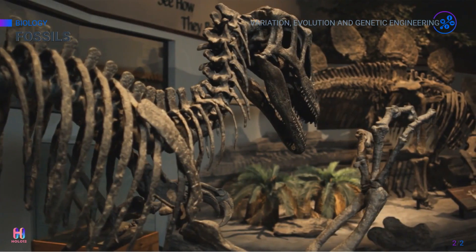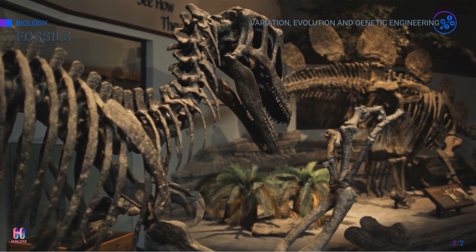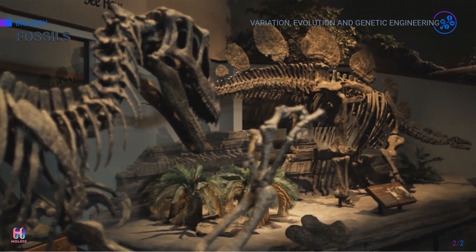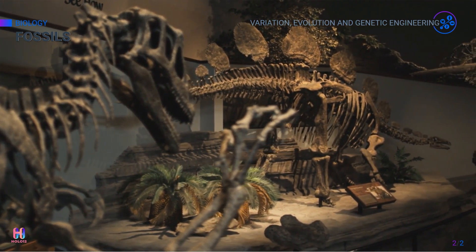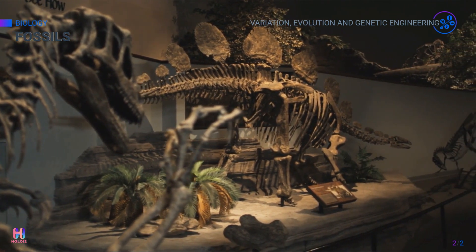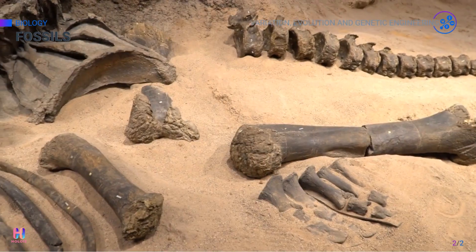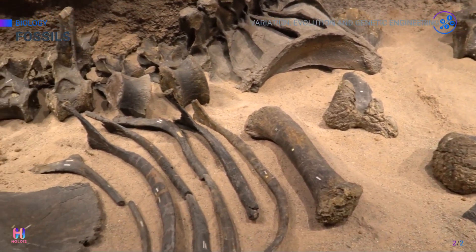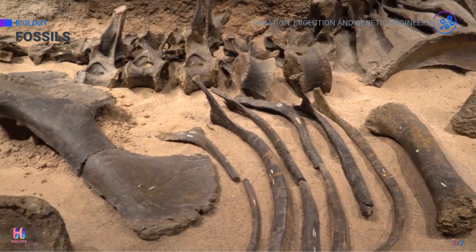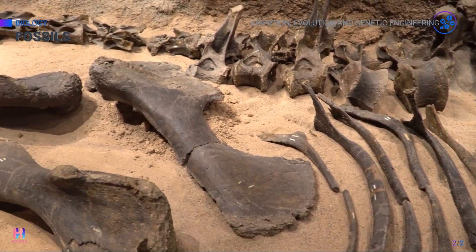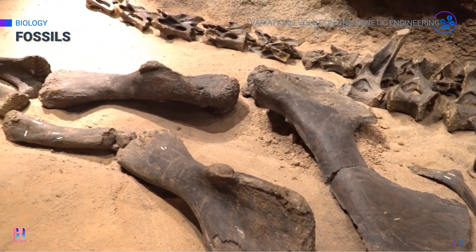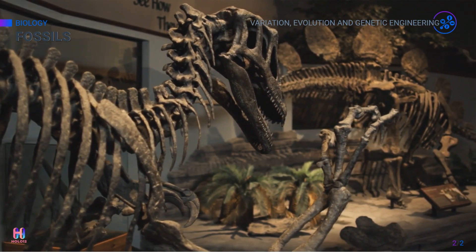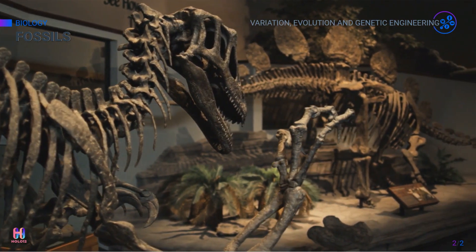Fossils — this is a fossil of a giant dinosaur. This fossil proves that dinosaurs existed a long time ago. If fossils did not exist, we would not have known that dinosaurs existed on Earth. Fossils are the remains of dead organisms such as plants and animals that were present millions of years ago. These fossils also help us to study evolution in organisms.